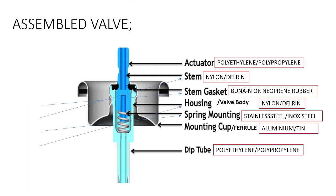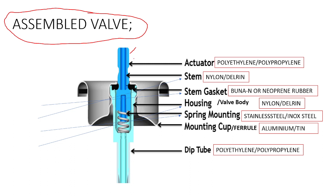Next is the valve — a major component of the aerosol. The different parts and their materials: the actuator is made up of polyethylene or polypropylene. The stem is made up of nylon or Delrin. The gasket is rubber in nature — specifically Buna-N or neoprene rubber.